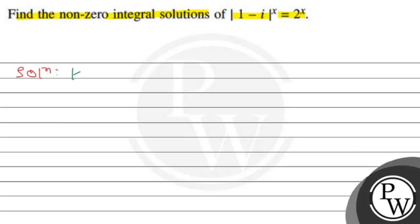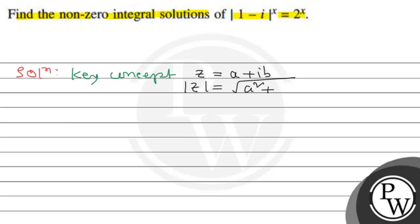The key concept for this question is: if a complex number z equals a plus ib, then modulus of z equals square root of a squared plus b squared, where a is the real part and b is the imaginary part.